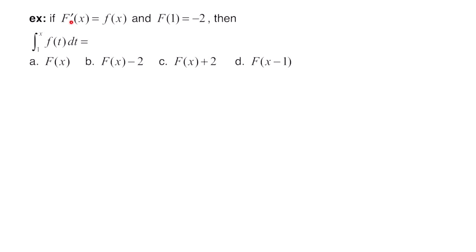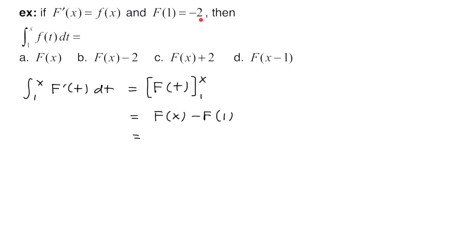This example says if capital F prime of x is equal to f of x, and we're given that capital F of 1 is equal to negative 2, we need to find the integral from 1 to x of lowercase f of t dt. Since F prime of x equals f of x, we replace f of t with capital F prime of t, then evaluate the integral. The antiderivative of F prime is capital F of t, evaluated from 1 to x. Plugging in x minus plugging in 1, and using F of 1 equals negative 2, we end up getting capital F of x plus 2. So the answer is C.